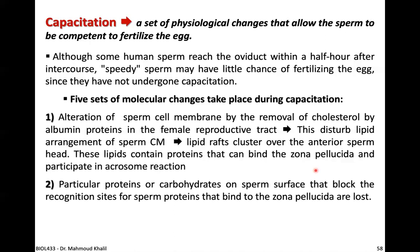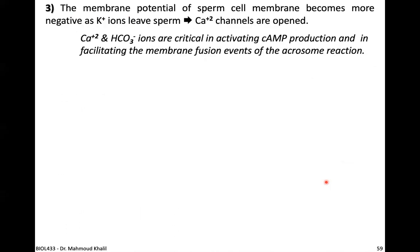The second molecular change is that particular proteins or carbohydrates on the sperm surface that block recognition sites for zona pellucida-binding proteins are lost. The third mechanism involves the membrane potential becoming more negative as potassium ions leave the sperm and calcium channels open. Calcium and bicarbonate ions are crucial in activating cyclic AMP production and facilitating the membrane fusion events of the acrosome reaction.